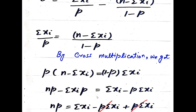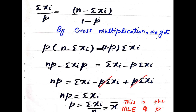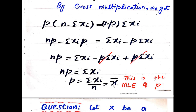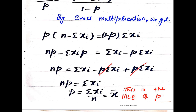By cross multiplication: (1 - p) · Σxi = p · (n - Σxi), which gives Σxi - p·Σxi = np - p·Σxi. Taking the p·Σxi terms together: np = Σxi. Therefore p̂ = Σxi/n = x̄. So the MLE of p is x̄, the sample mean.